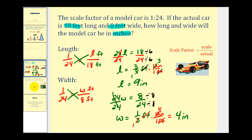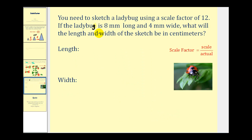Let's try another one. Here we need to sketch a ladybug using a scale factor of twelve, which would be a ratio of twelve to one. If the ladybug is eight millimeters long and four millimeters wide, what will the length and width of the sketch be in centimeters? Once again, notice we have a change in units — the measurements are in millimeters, but we want to convert to centimeters using the scale factor of twelve. We'll first use the scale factor to determine the measurements in millimeters and then convert to centimeters.